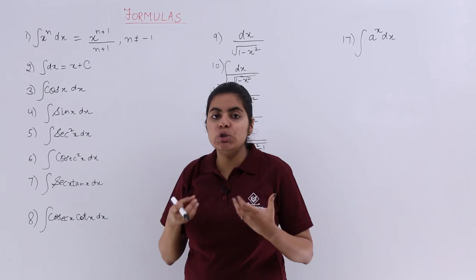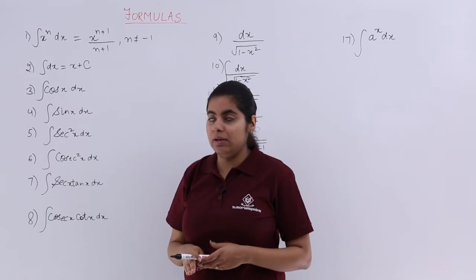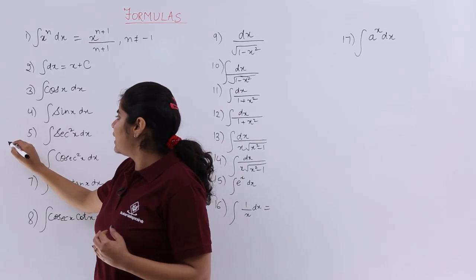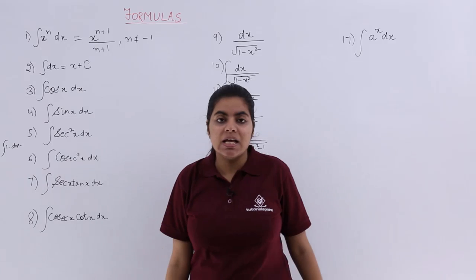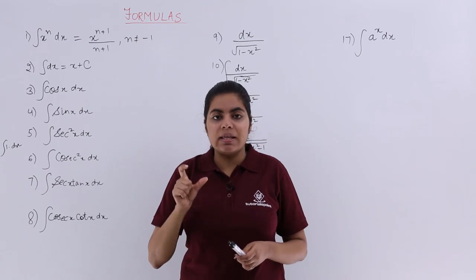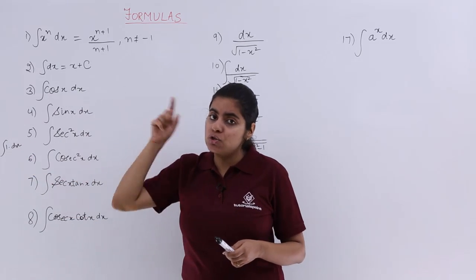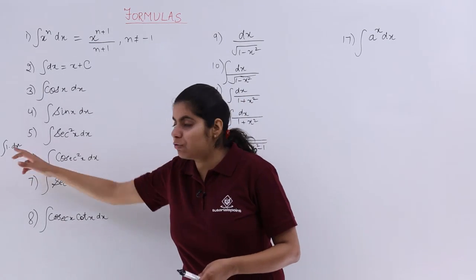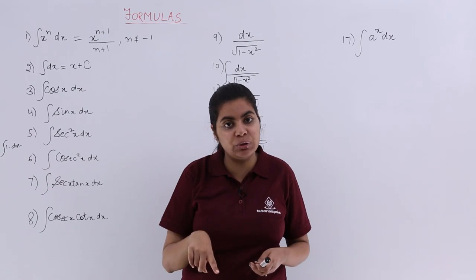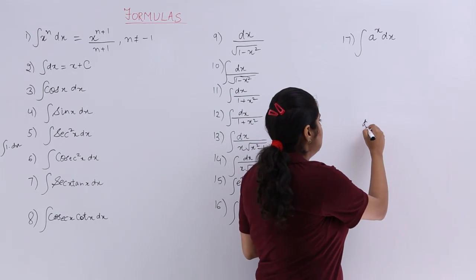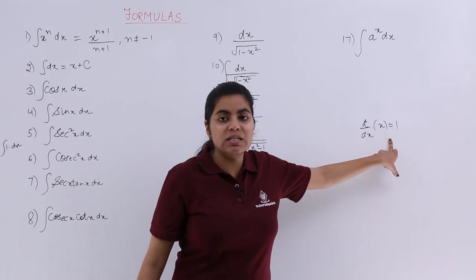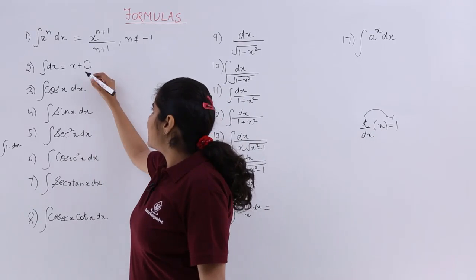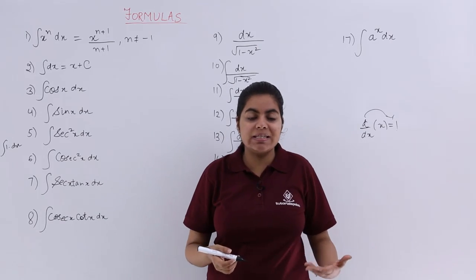How do you calculate integrals? Integration of simply dx means integration of 1 times dx. What value should be differentiated with respect to x so as to give me 1? Because integration is the reverse process of differentiation. x should be differentiated with respect to x in order to give me 1 — we write d/dx of x equals 1. So if that d/dx goes over, integration of 1 gives me x, and my answer would be x plus a constant of integration.